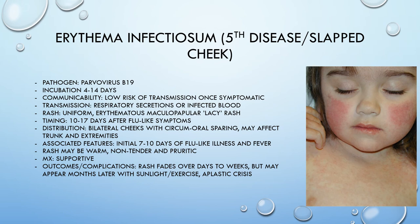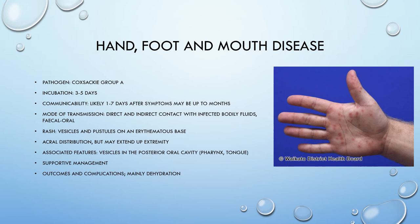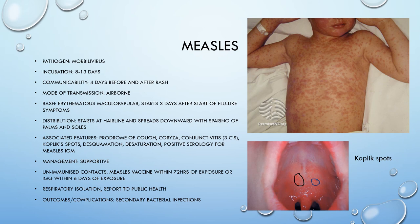A differential for fifth disease is domestic violence, and eczema with that cheek distribution. Moving on to hand, foot, and mouth disease, caused by Coxsackievirus Group A. The incubation period is 3 to 5 days, and communicability is quite likely 1 to 7 days after symptoms but may persist for months. It's transmitted through direct and indirect contact with infected bodily fluids, and also faecal-oral route. The rash is vesicles and pustules on an erythematous base, with acral distribution on the hands and feet that may extend up the extremity. It's also associated with vesicles in the posterior oral cavity. Management is supportive and the main complication is dehydration.